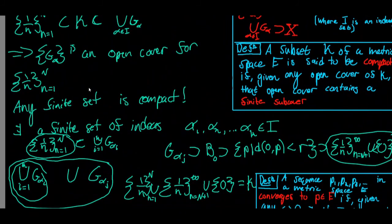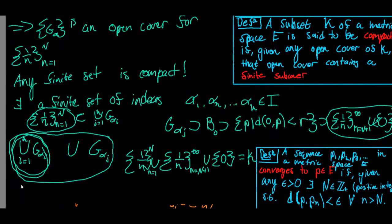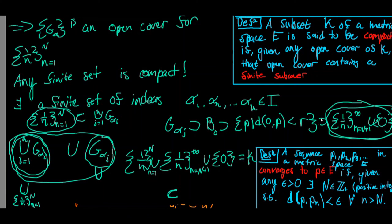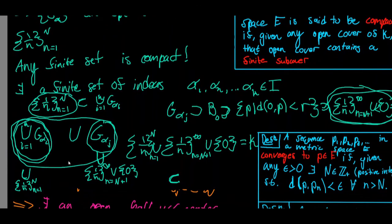I've found a finite sub-cover for K. The union of finitely many sets from our open cover contains K: G_{alpha_j} contains {1/n : n = N+1 to ∞} union {0}, and the union from i=1 to k of G_{alpha_i} contains {1/n : n = 1 to N}. Together these two sets are K, so K has a finite sub-cover, and therefore K is compact.